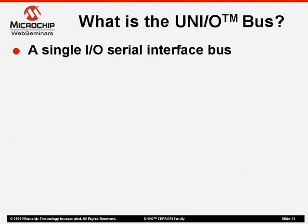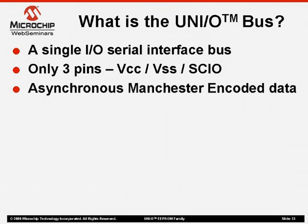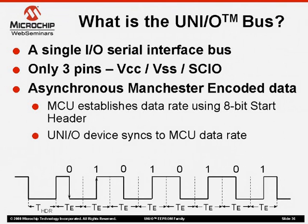Now that we have reviewed the different buses, I want to spend some time discussing a few of the UniO bus requirements. The UniO bus uses a single I/O port — only three pins are used: power, ground, and a single serial data I/O port. For communications to be supported using a single line, a Manchester encoded communications protocol is used. In a UniO bus interface, the master will establish the data rate by sending an 8-bit start header at the beginning of all communications, and it is the job of the UniO slave device to sync up to this data rate. An example of an 8-bit start header is shown below. The slave will begin the synchronization step after it sees a low start header pulse, but will synchronize only after 8 consecutive pulses of alternating 0s and 1s have been recognized.